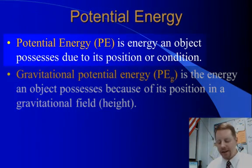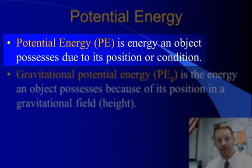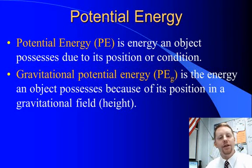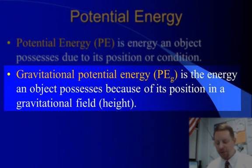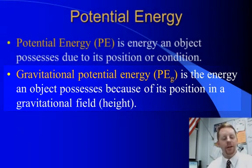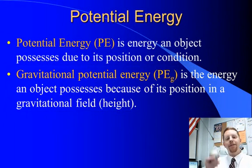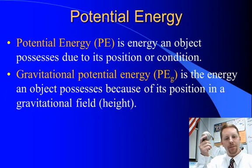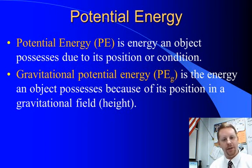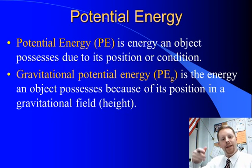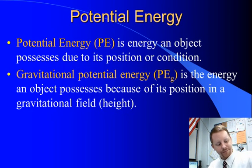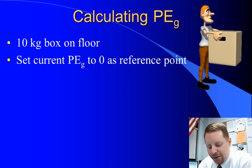If we talk about potential energy, that's energy an object possesses due to its position or its condition. The most common one we're probably going to use most frequently, at least at this point in the course, is gravitational potential energy — energy an object possesses due to its position in a gravitational field, usually referring to height. If I lift a baseball up in the air, it has more gravitational potential energy the higher it is from the surface of the Earth, and that gravitational potential energy can be transformed into kinetic energy as it falls.